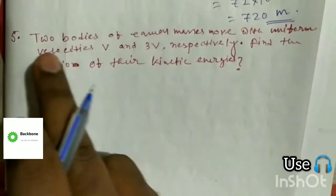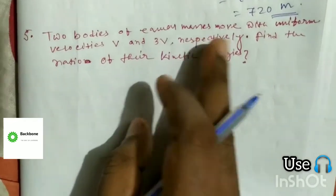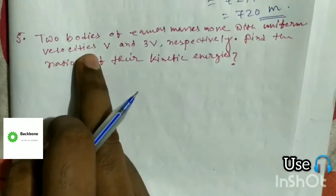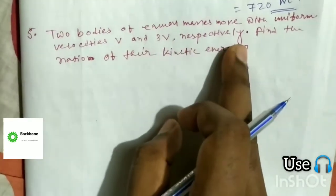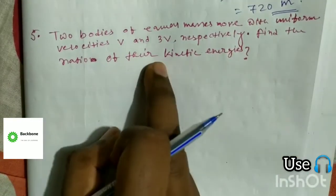Last question, very important: Two bodies of equal masses move with uniform velocities V and 3V respectively. Find the ratio of their kinetic energy.